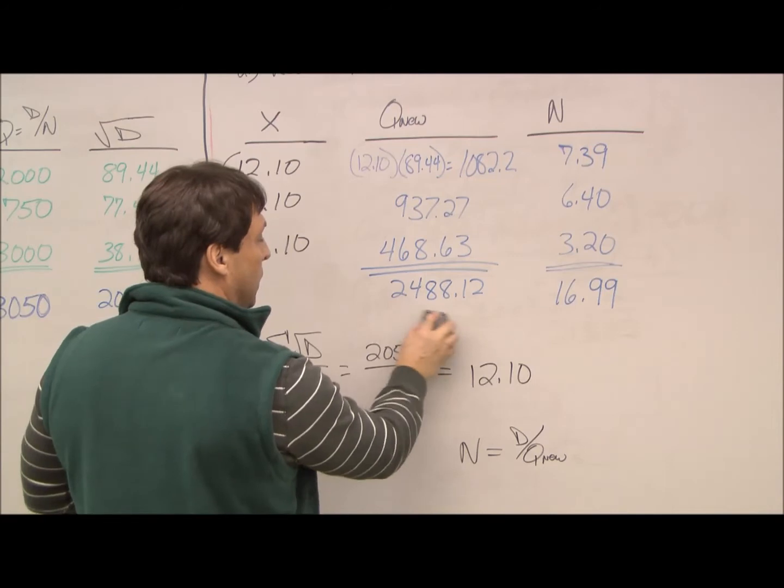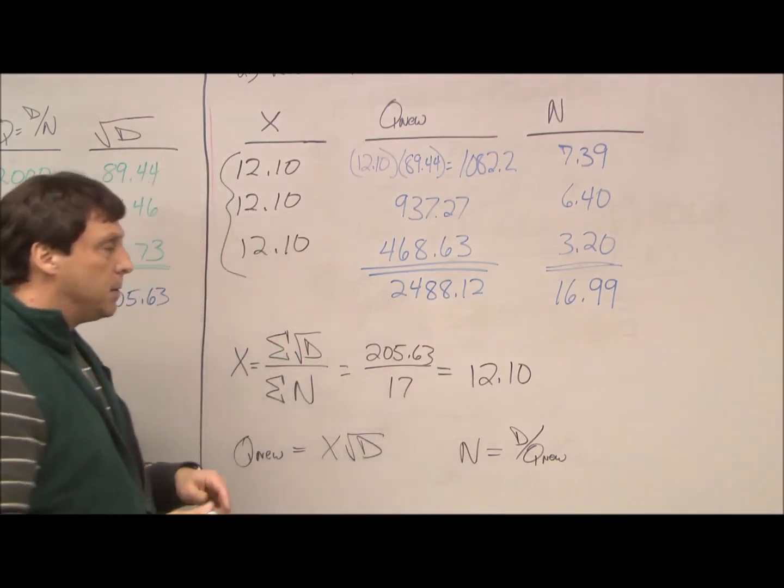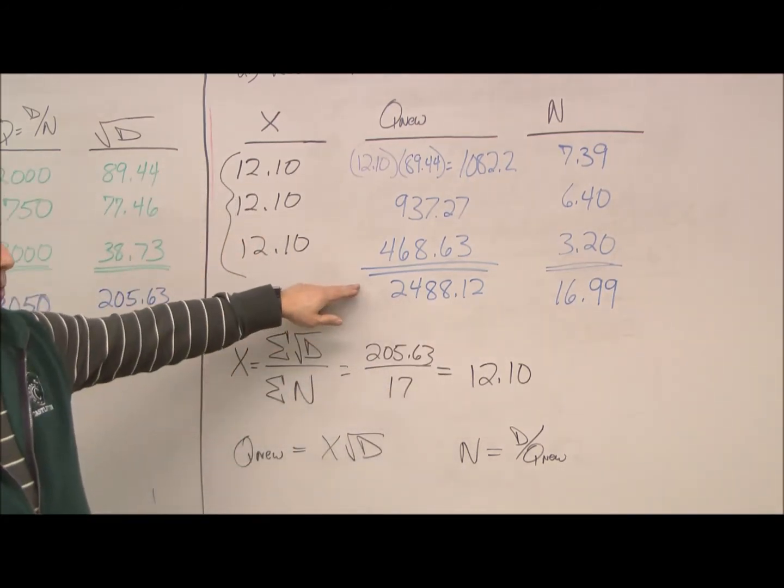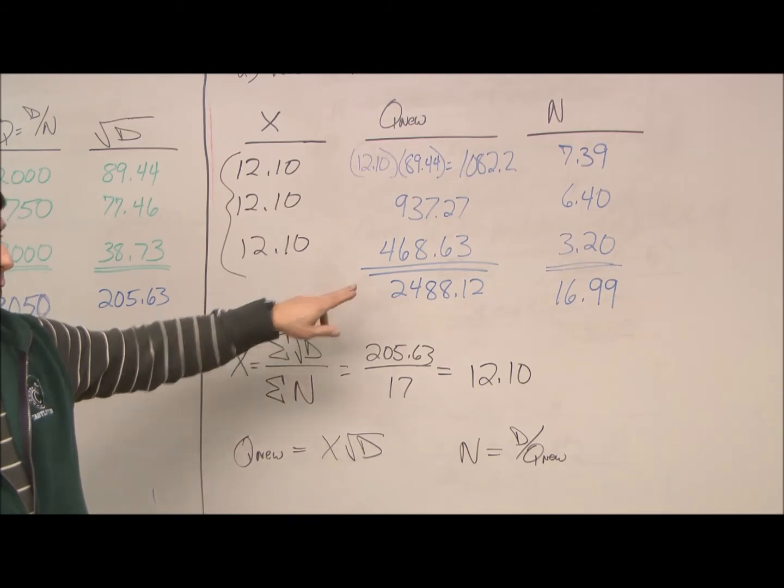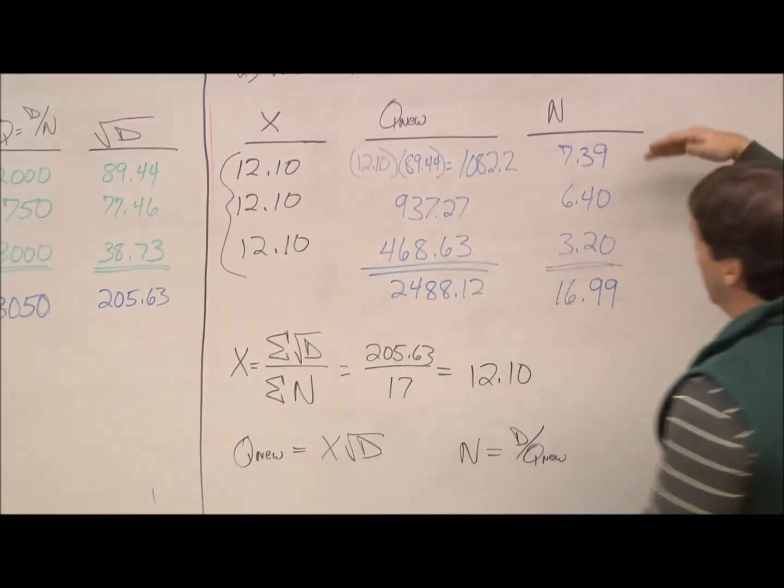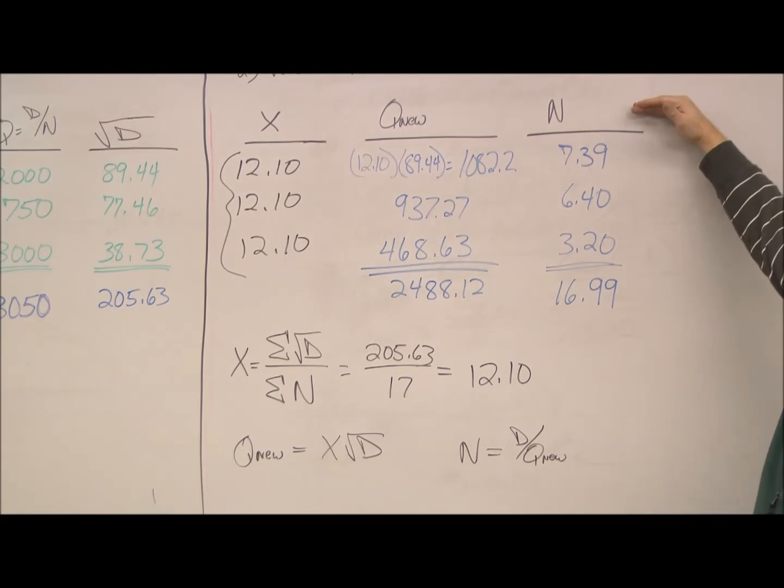So, by doing it this way, you have saved Mr. Richards and the company money by holding less inventory. Now, just as a sanity check, we look at our N, the number of orders.